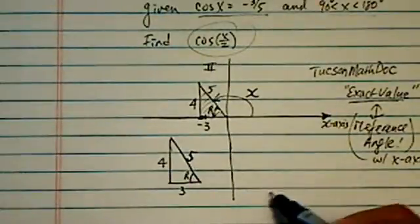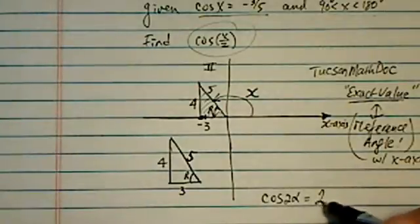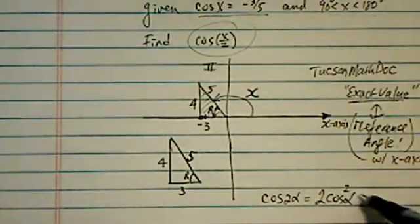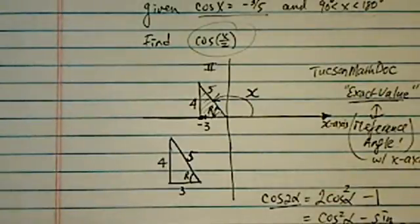Reference angle gives me all the values for the exact value problem. And in our case here, I'm also going to use the fact that cosine 2 alpha is twice cosine alpha squared minus 1. This is not as surprising because cosine 2 alpha is cosine squared minus sine squared.